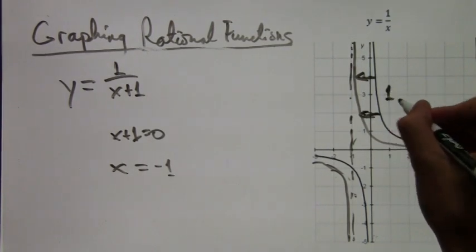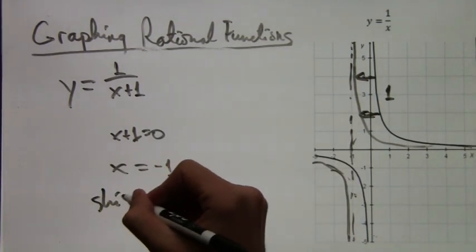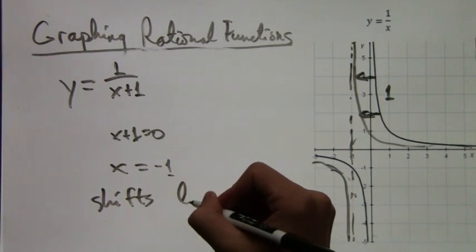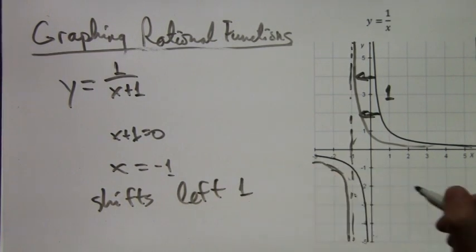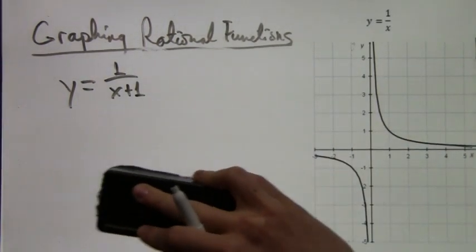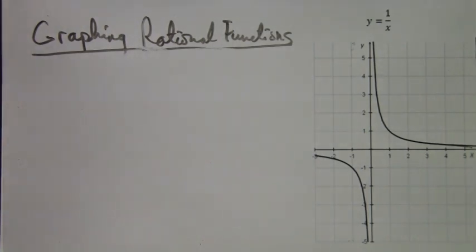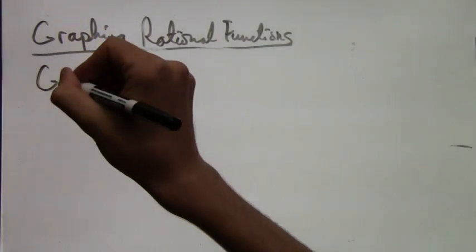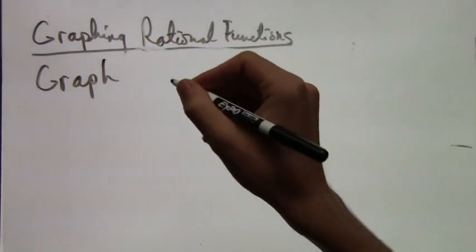So really, all you need to graph these rational functions is to know where the asymptotes are. And there's two asymptotes. There's the vertical one and the horizontal one. So I'll show in this next example how to find them and how to use them to our advantage.